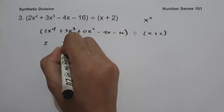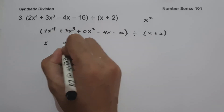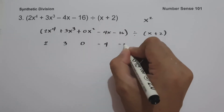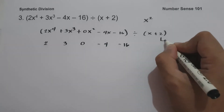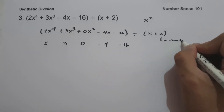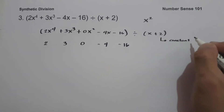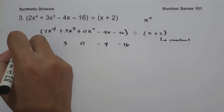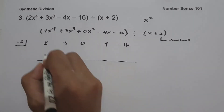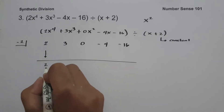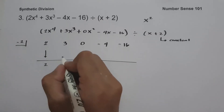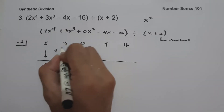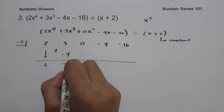The coefficients are 2, 3, 0, negative 4, and negative 16. Since our constant is positive 2, we take the opposite sign, that is negative 2. We bring down 2. Two multiplied by negative 2 is negative 4. Three plus negative 4 is negative 1.